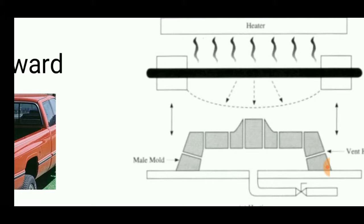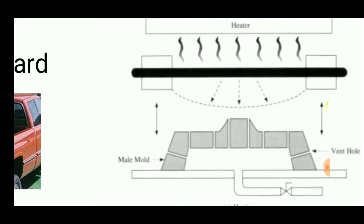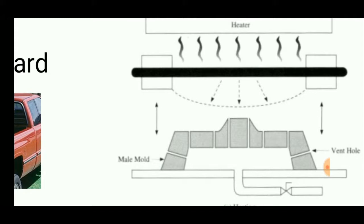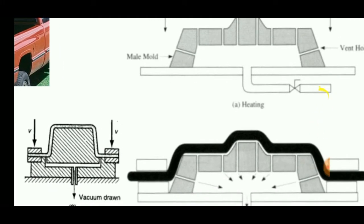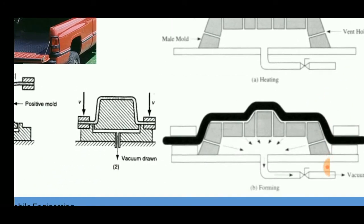A vacuum machine is used to suck the air inside the mold so that the accurate shape of the mold is taken up by the plastic sheet and a final product can be achieved.